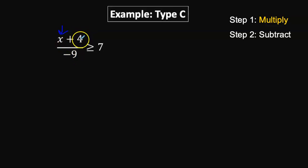The x is separated from the 4 by addition. That's why we're going to use the inverse operation subtraction. The x is separated from the negative 9 by a fraction bar which means division. That is why we're using the inverse operation of multiplication.